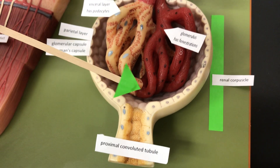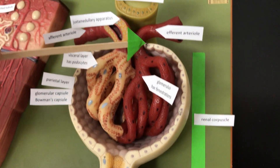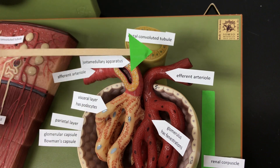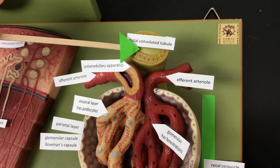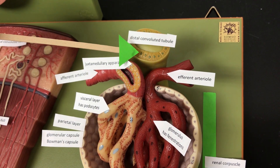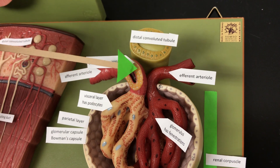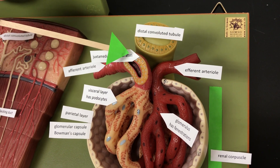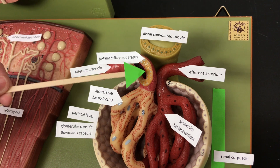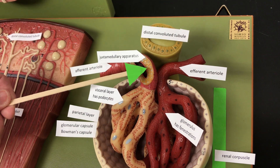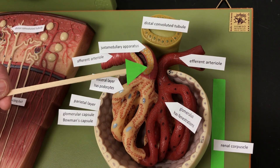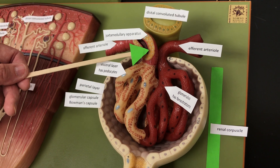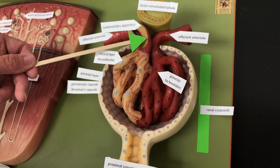When blood leaves the glomerulus, it's going to go out the efferent arteriole. This is the distal convoluted tubule, and the juxtaglomerular apparatus — which is proximal to these arterioles — is going to monitor blood pressure and release appropriate hormones in order to maintain homeostasis.